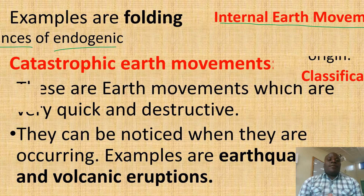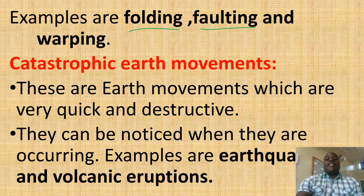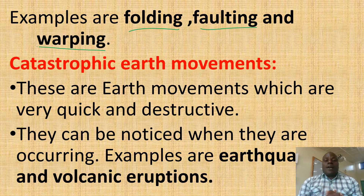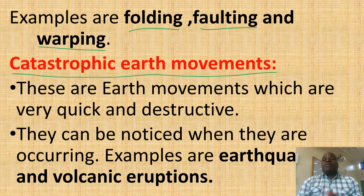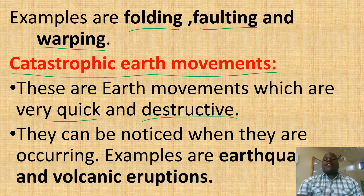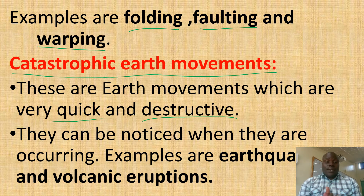Examples of diastrophic movements are folding and warping. Then we have catastrophic earth movements. These are earth movements which are very quick and destructive. They are faster, very destructive, and can be noticed when they are taking place. For example, earthquakes and volcanic eruptions.